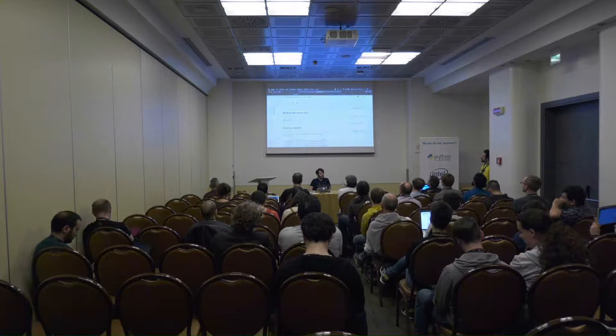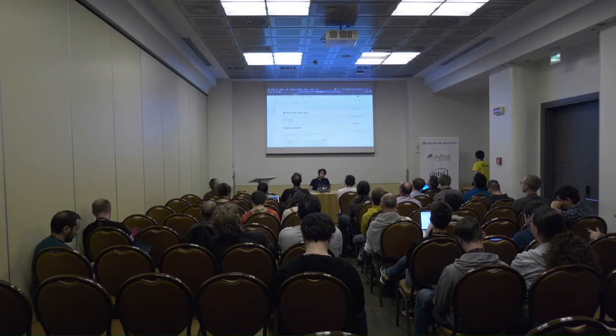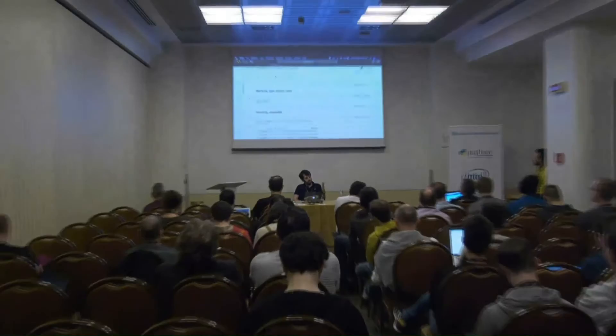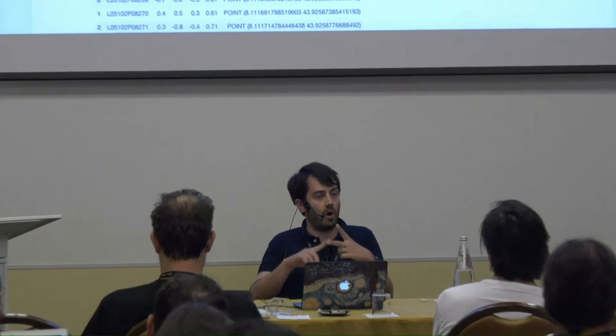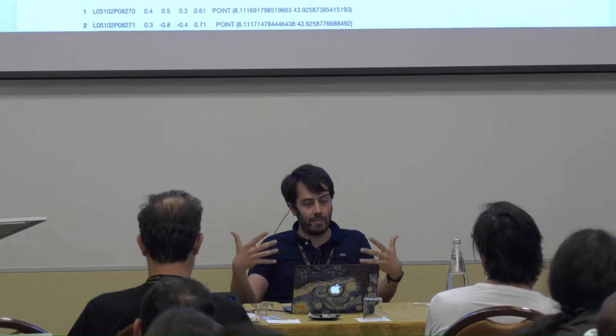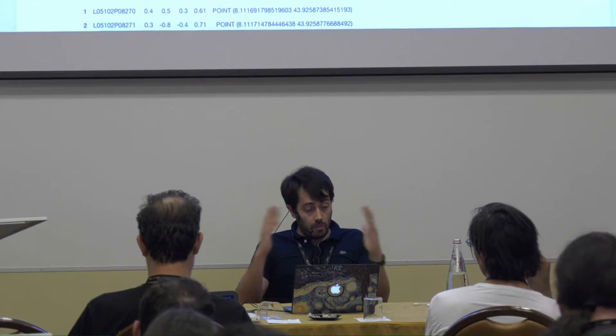The first part of this training is all about vectors. Vectors are the equivalent in geospatial of a discrete time source — basically a finite set of features characterized by two different types: a geometry, which can be a polygon, a point, a line, a multi-line, or a complex geometry, and a set of attributes that are related to the geometry itself.